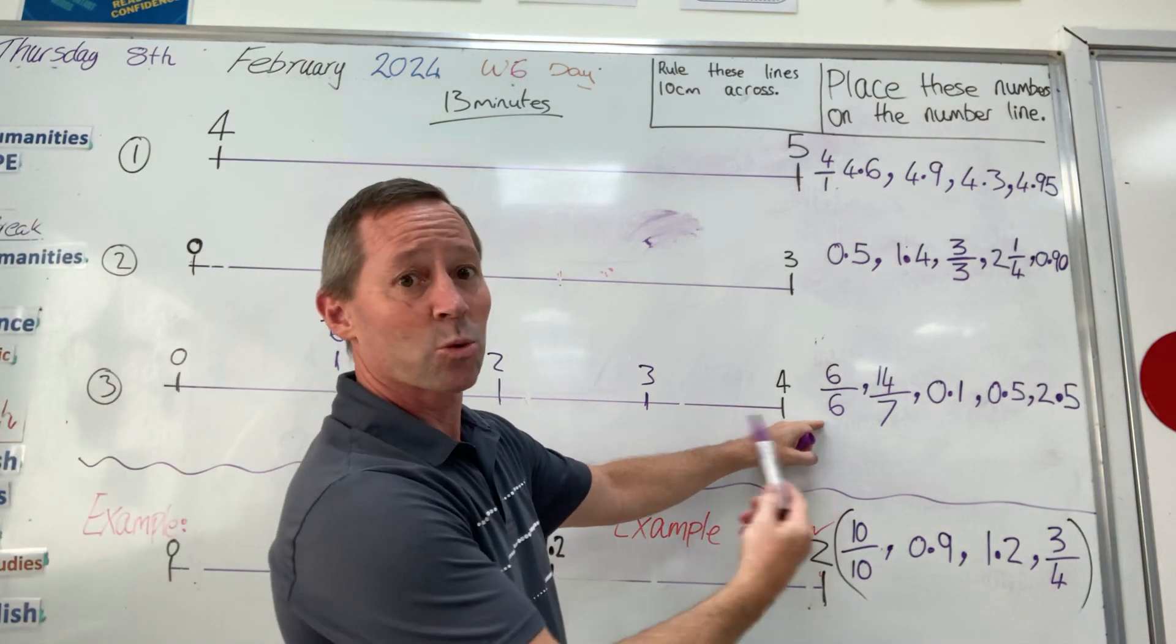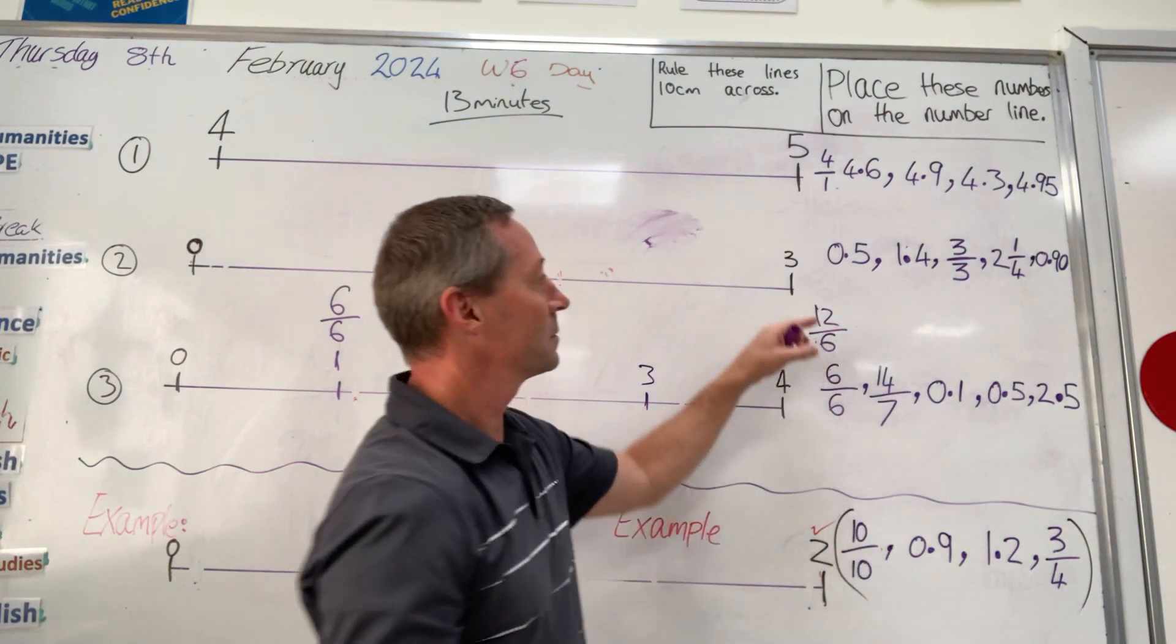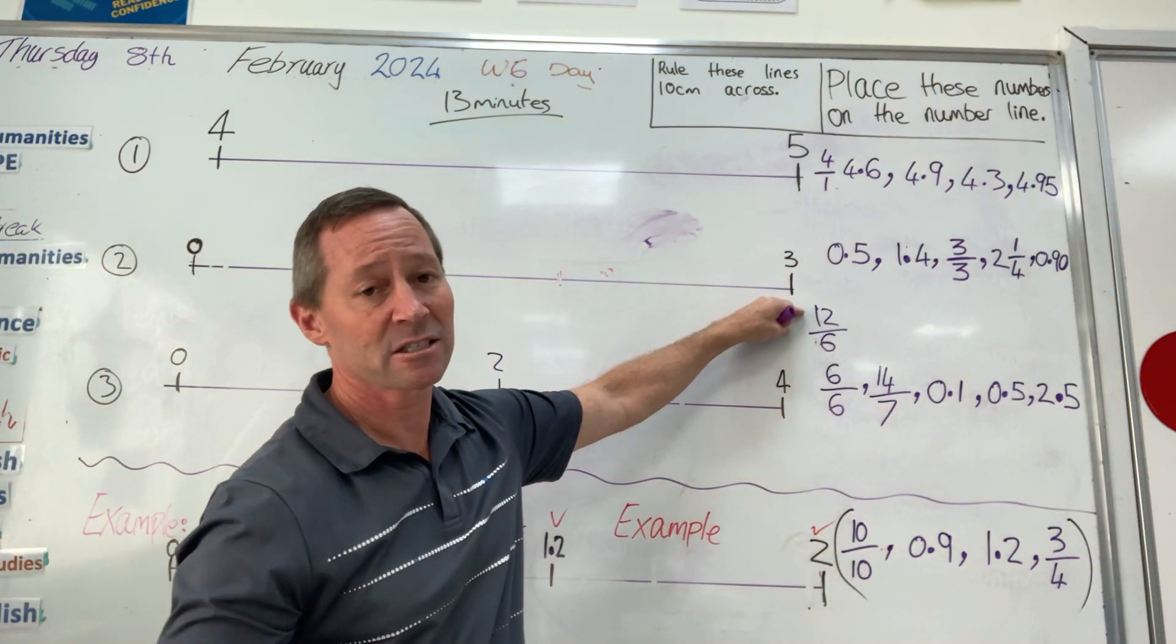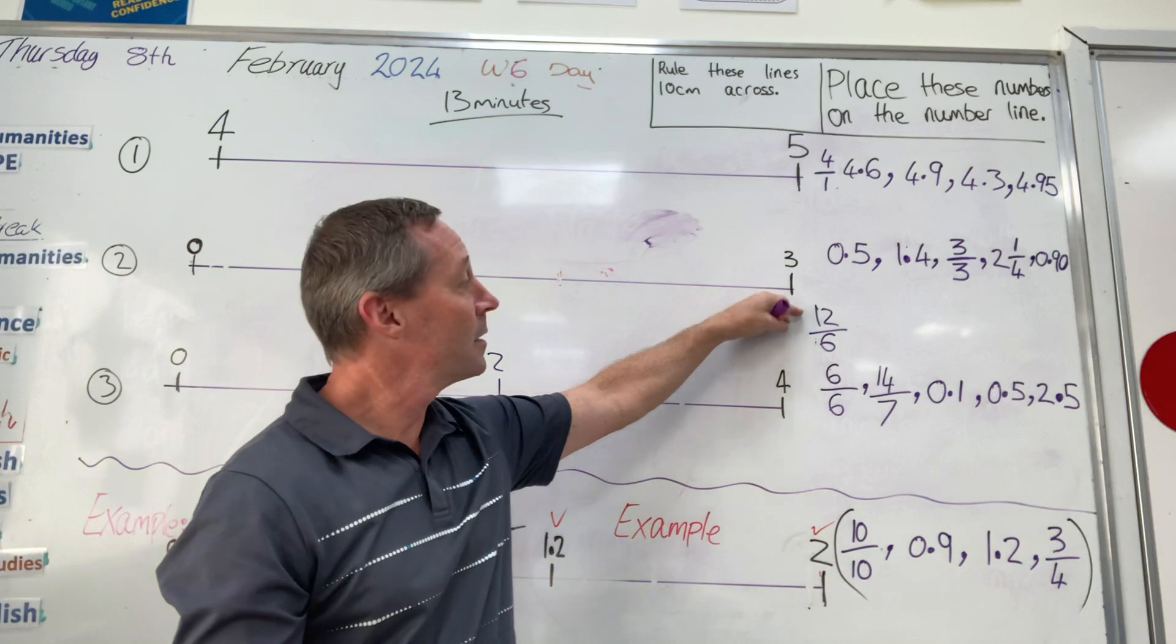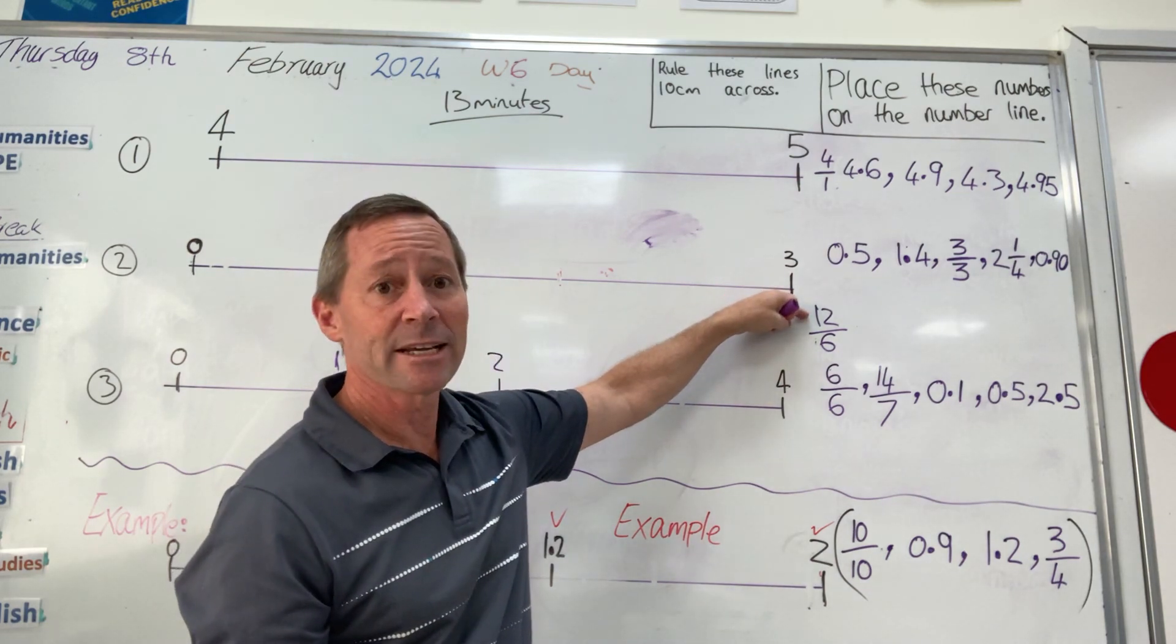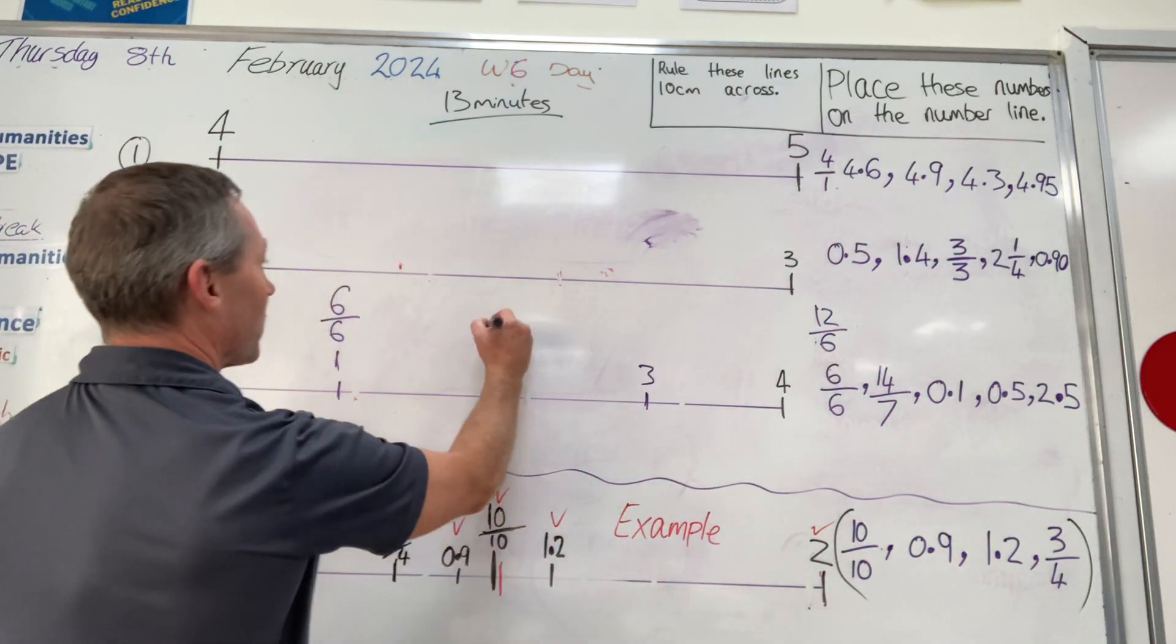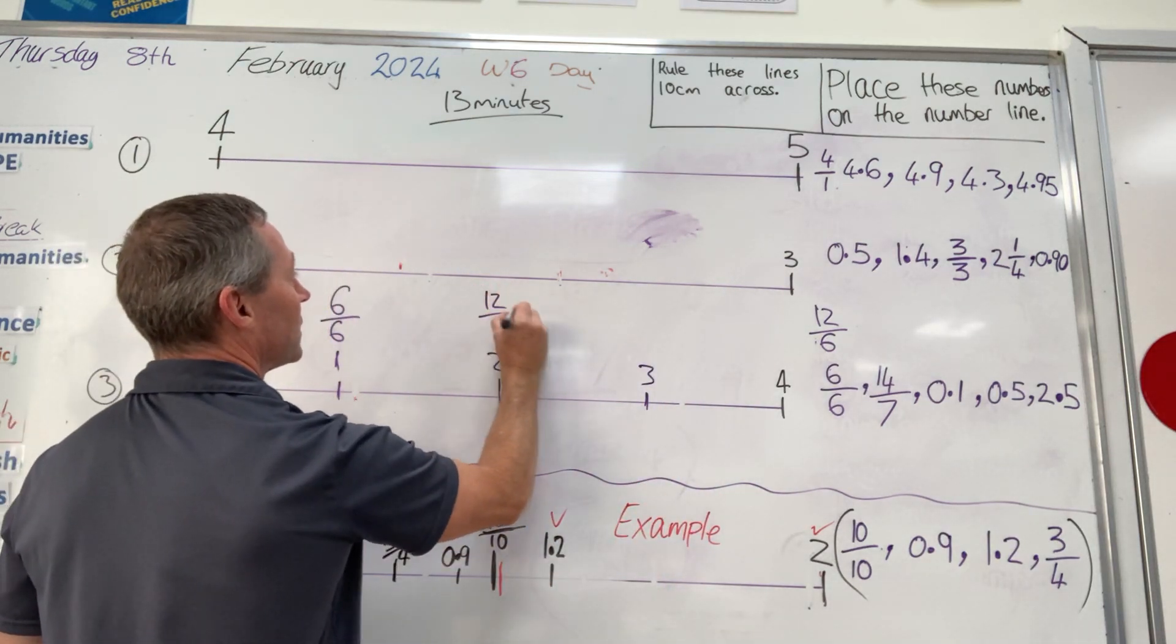So if it happened to be 12 over 6, and there's 12 slices, this is where you need to know your dividing and your multiplication skills, this would actually be two whole pizzas. Which means it would go here. I would have 12/6.